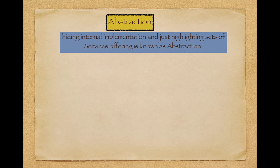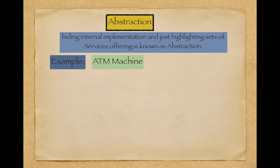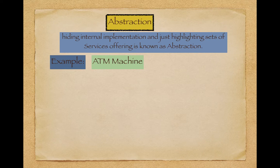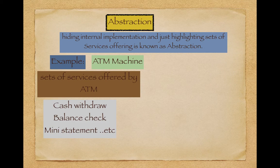The best example for abstraction is an ATM machine. When you go to an ATM machine and insert your card, you are presented with a screen showing cash withdrawal, balance check, mini statement, mobile number updation, and so on. These are nothing but the sets of services offered by the ATM machine to us.